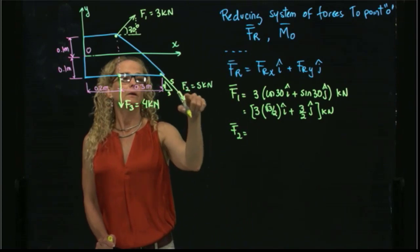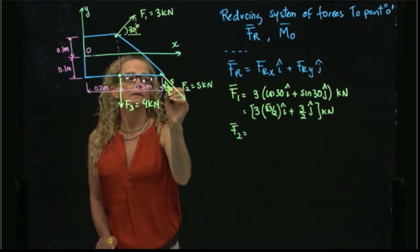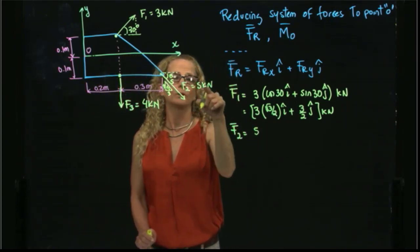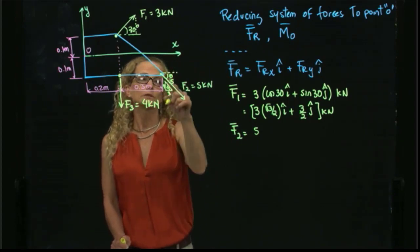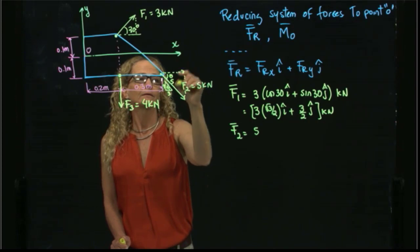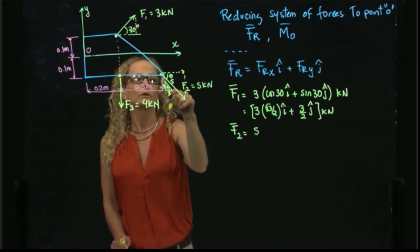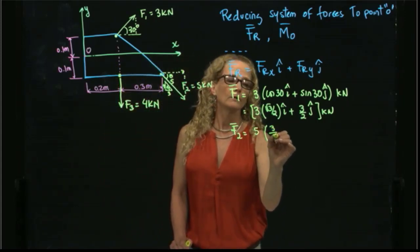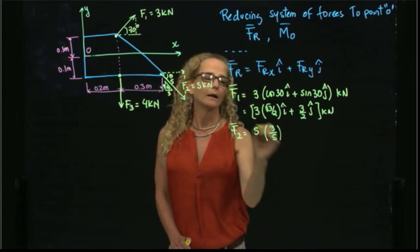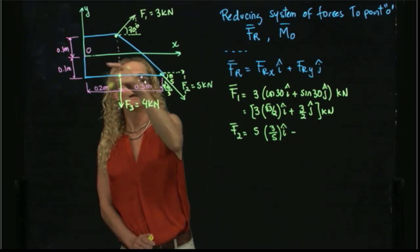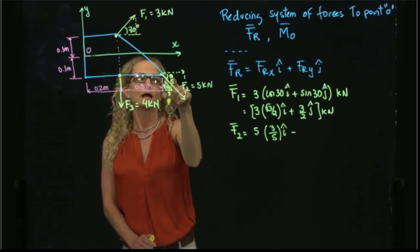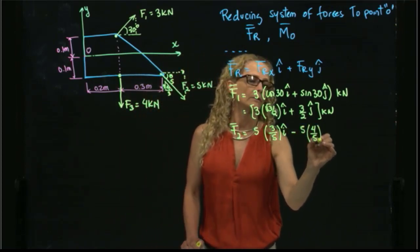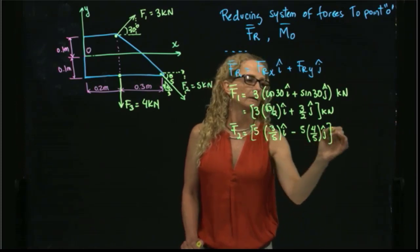F2 is decomposed using angle theta. It has a magnitude of 5 kilonewtons. The X component is cosine of theta, which equals the adjacent over the hypotenuse, so 3/5 in I. The Y component is negative sine of theta, which is 4/5, so it becomes negative 5 times 4 over 5 in J. All in kilonewtons.